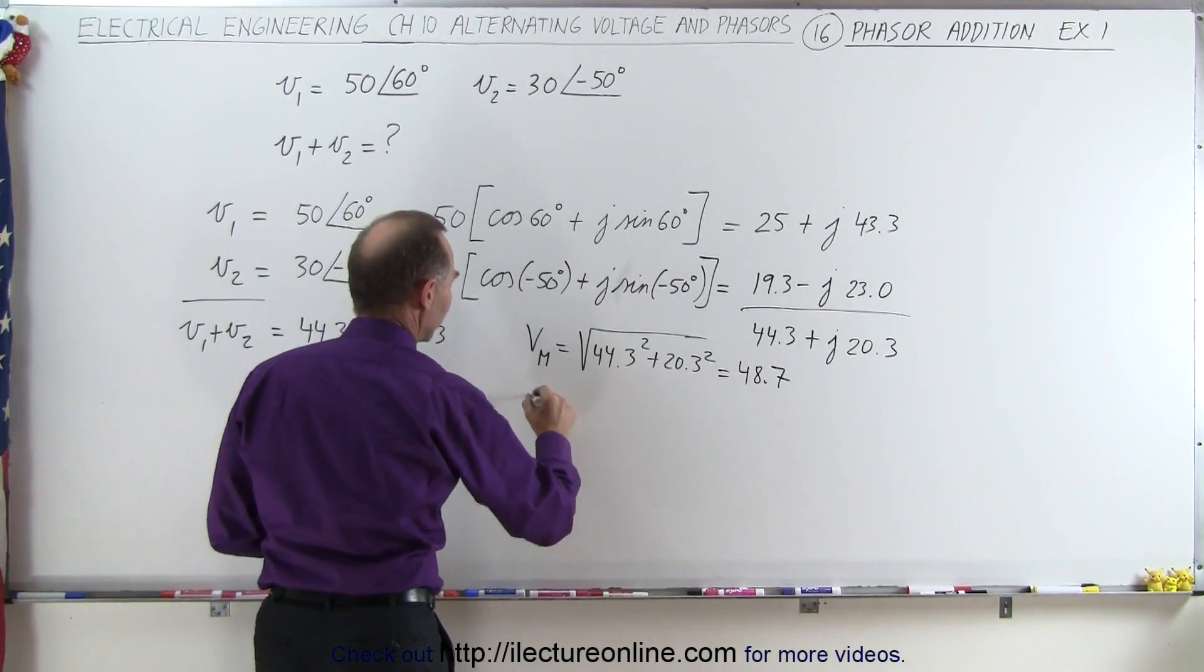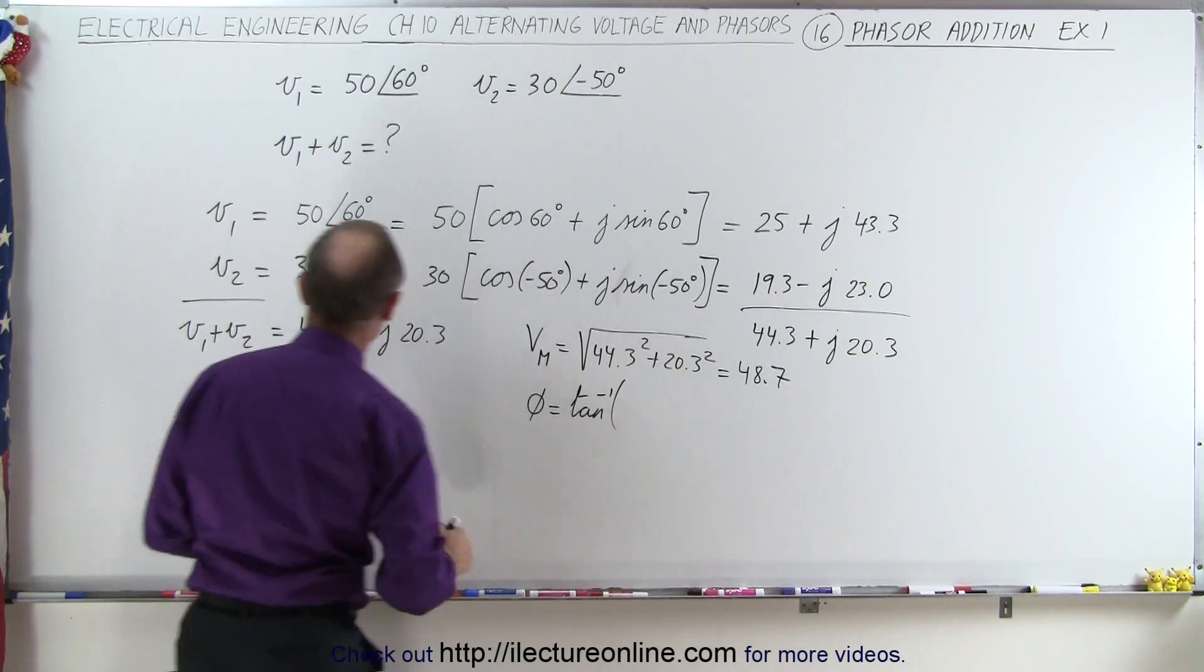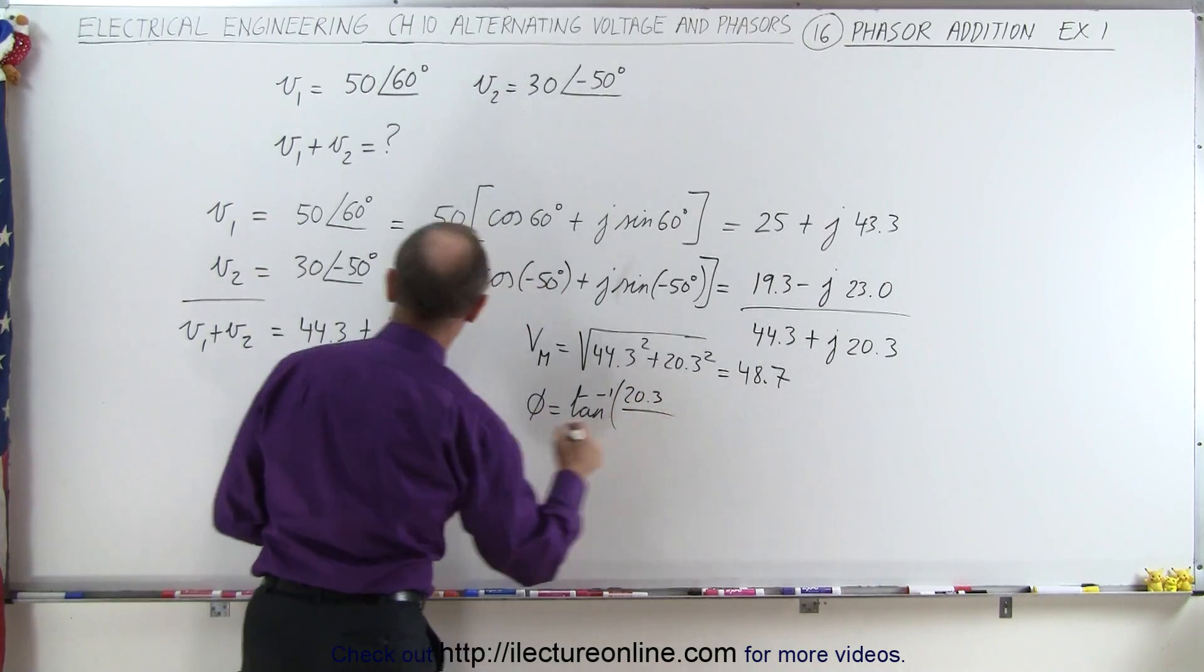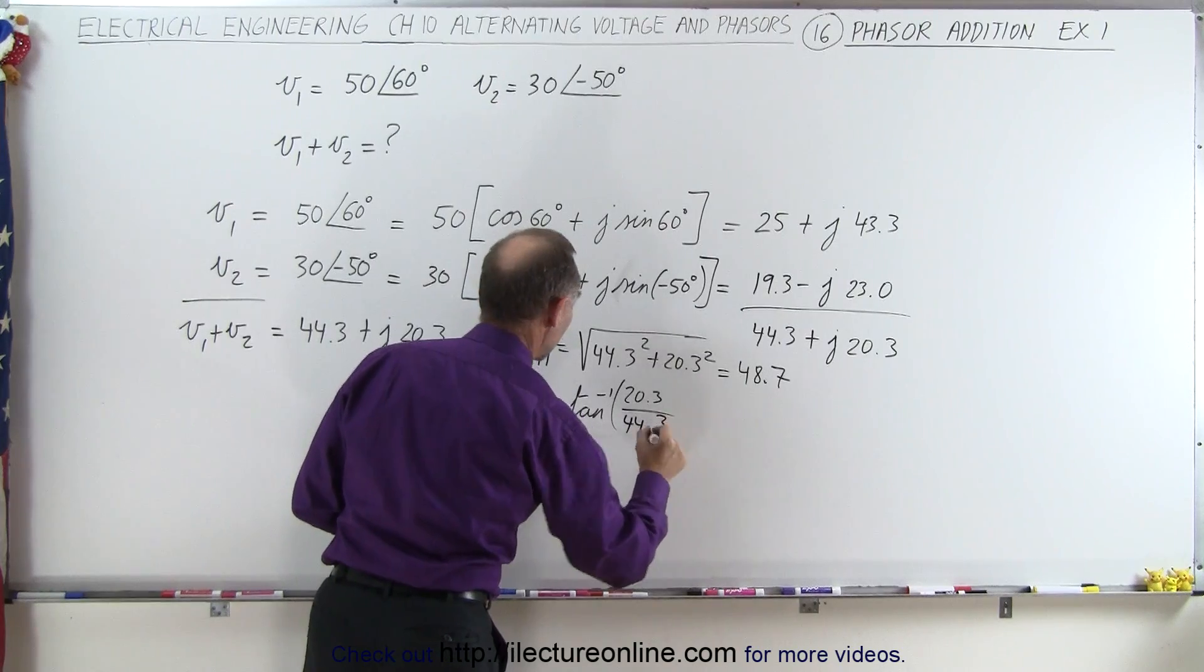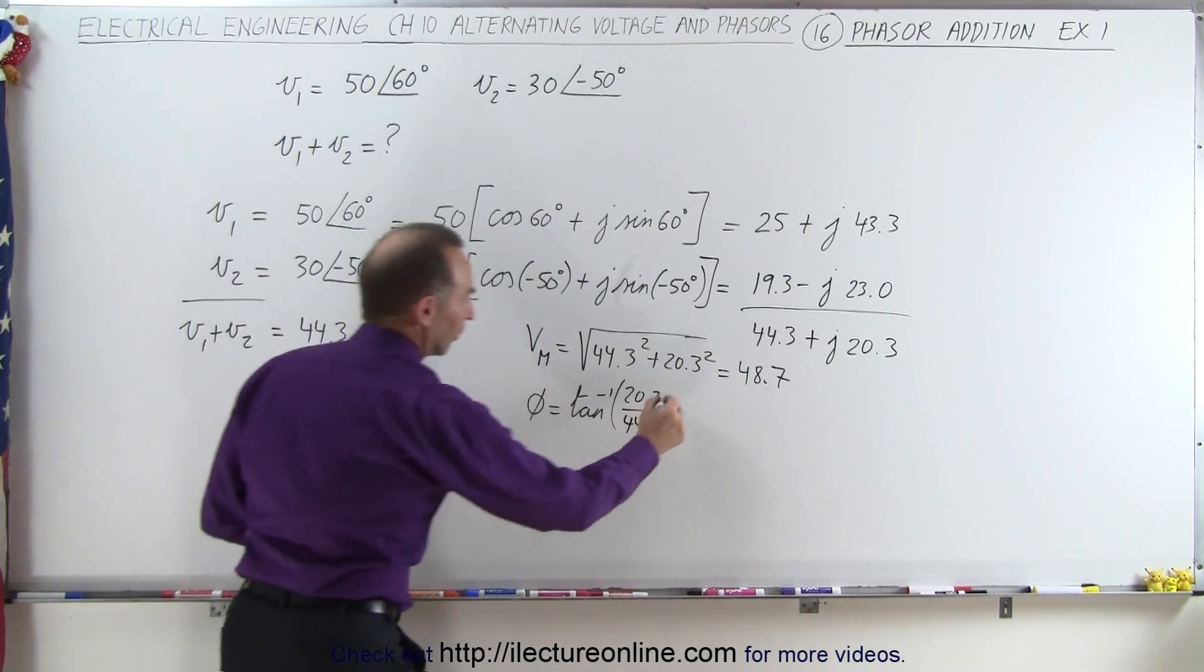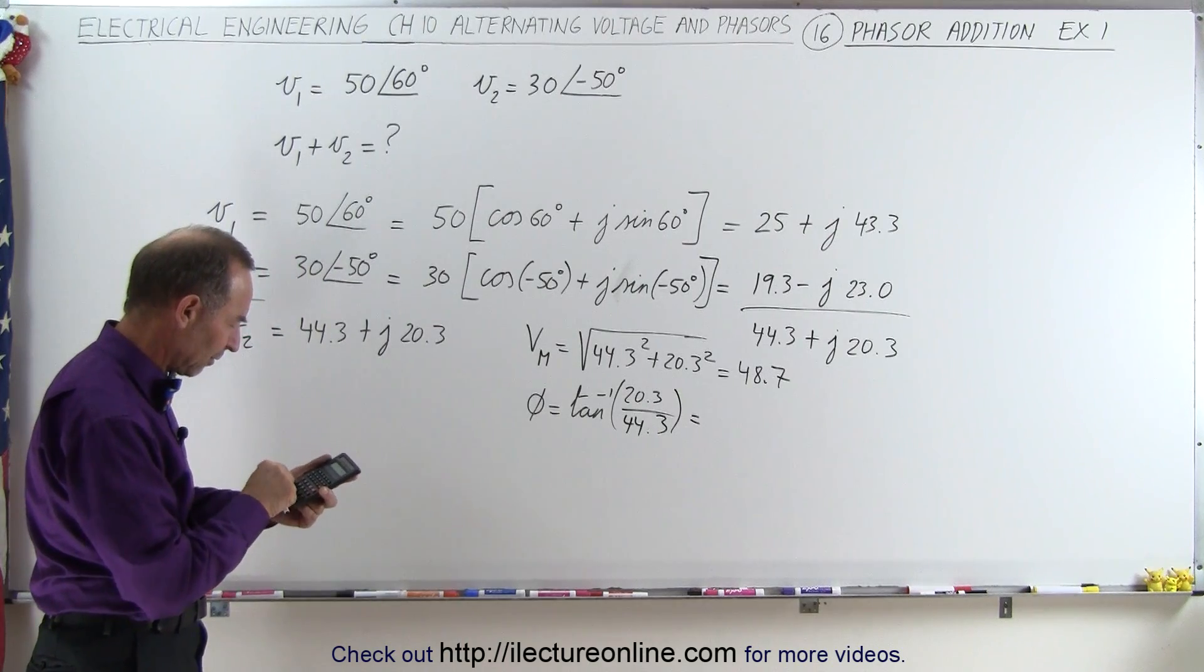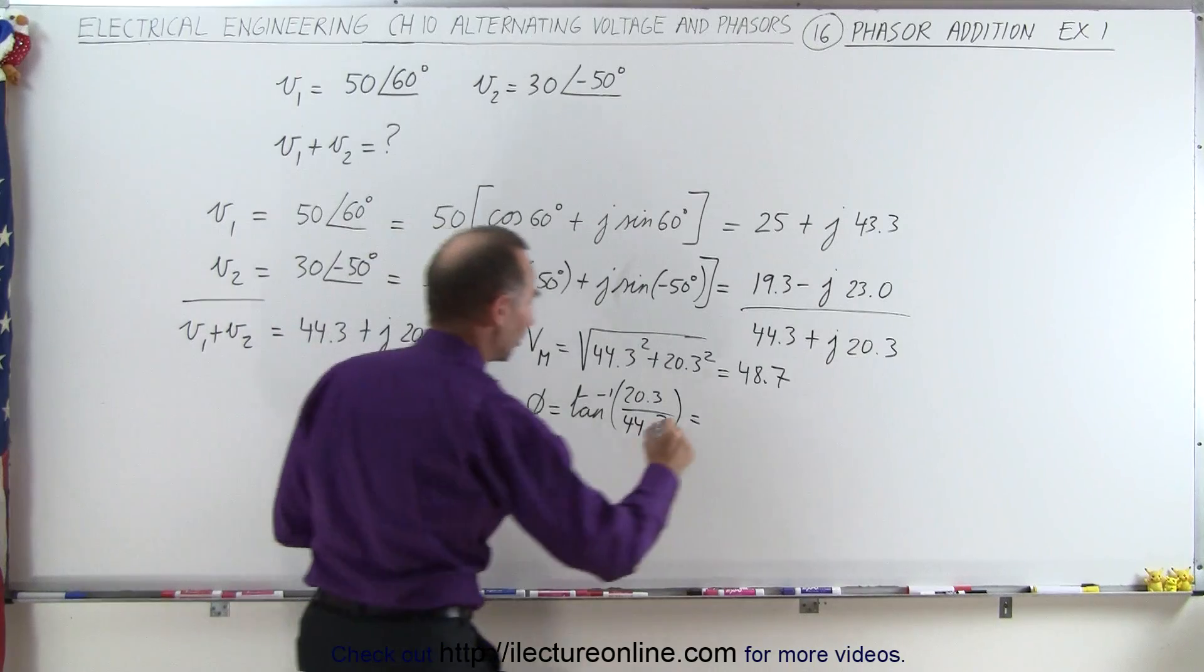And then for the phase angle, that will be equal to the inverse tangent of the imaginary part, which is 20.3, divided by the real part, which is 44.3. Take the inverse tangent and we get 24.6 degrees.